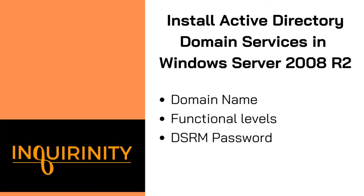Part of the preparation before adding the ADDS role in Windows Server includes the following: the domain name, the functional level, and the DSRM password. For the domain name, you need to know what domain name to use in your company — for example, inquirinity.local or inquirinity.internal. The functional level of a domain or forest depends on which Windows Server operating system versions are running on the domain controllers, so you need to perform research prior to installing a domain controller.